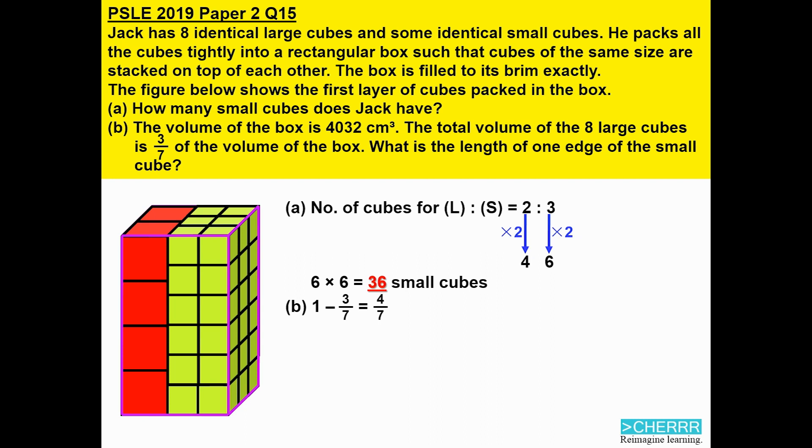So four out of seven of this volume 4032 will be the volume for the small cubes, and that will be 2304 cubic centimeters.